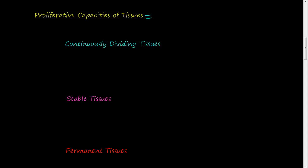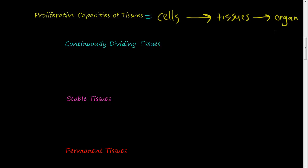There are cells, and a bunch of cells equals tissues, and then tissues make up organs. For example, the liver has certain tissues that make it up, and there are certain cells that make up those tissues. So this is going from a small view — an individual cell — up to a gross appearance or bigger collection of cells. When I talk about the proliferative capacity of tissues, I'm talking about the proliferative capacity of these certain cell types.